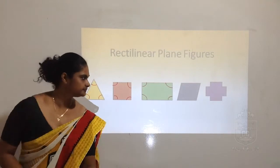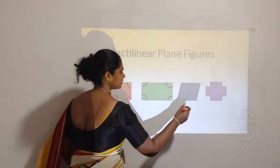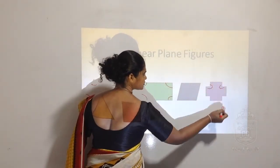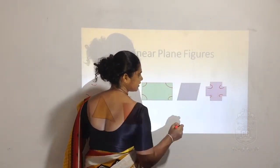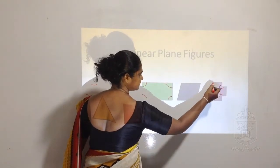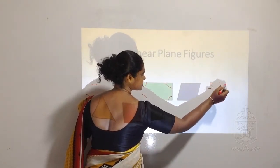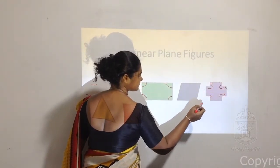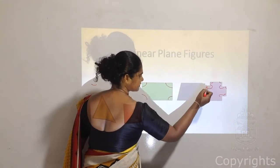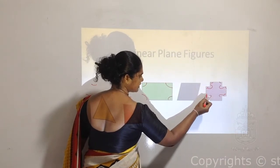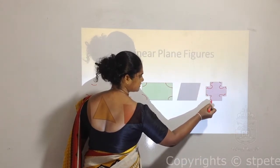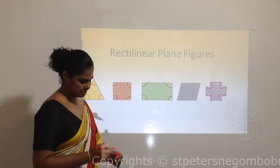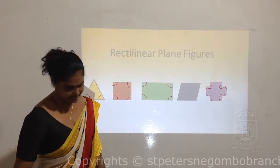The shape of this cross is also having angles - one, two, three, four, five, six, seven, eight, nine, ten, eleven, twelve. There are twelve angles in the cross.